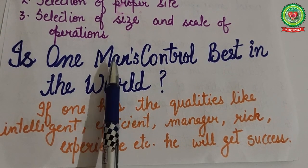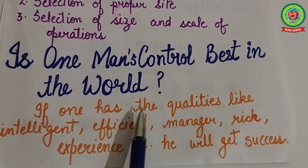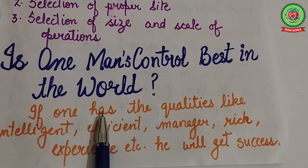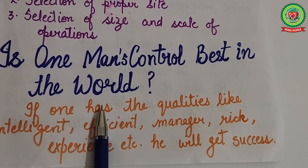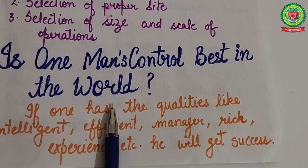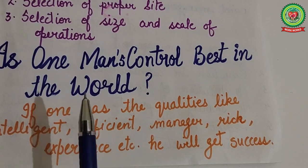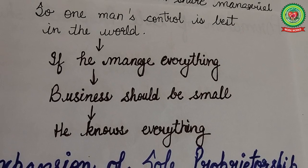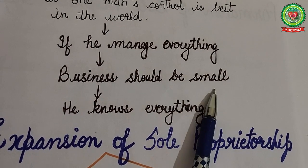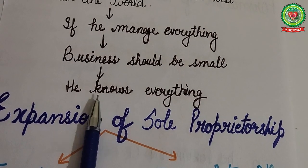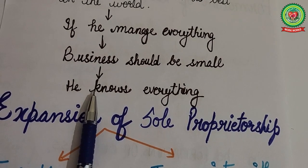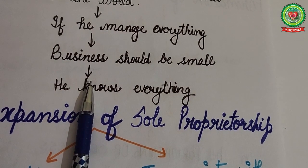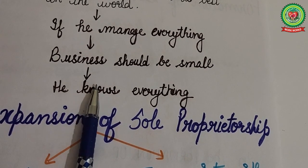Our next topic is whether one man's control is best in the world. If a person has qualities like intelligence, efficiency, and rich experience, he can succeed in business, since the trader need not depend on anybody else — he decides, controls, maintains secrecy, and develops good relationships with employees and customers. However, in reality, no person can be perfect. A single person can act efficiently only up to a limit, after which things go out of control. Therefore, sole trade business is not the best in the world because every person has a limit to his abilities.